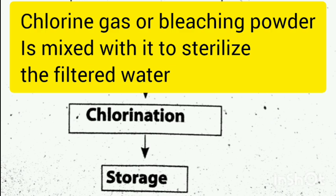In coagulation, we add lime to regulate the pH value. In filtration, fine sand and gravel are used. In chlorination, chlorine gas or bleaching powder is used.